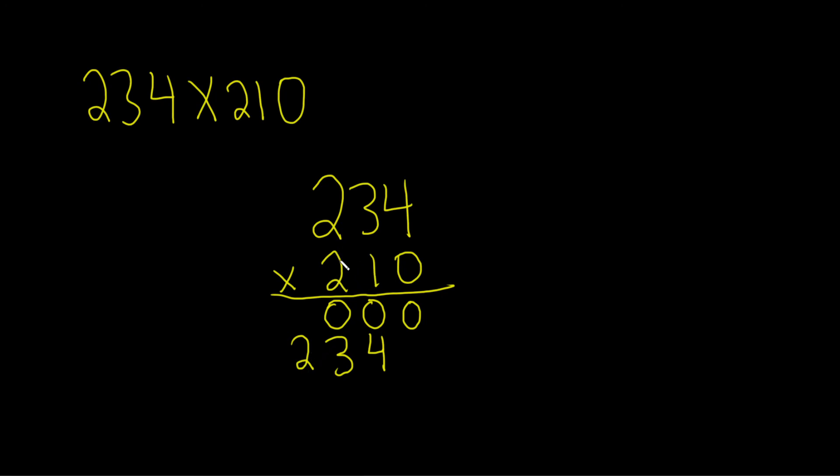Then we go to the next one, which is 2. 2 times 4 is 8. Notice it's written here - we kind of shift over every time. So 2 times 4 is 8, 2 times 3 is 6, and 2 times 2 is 4.